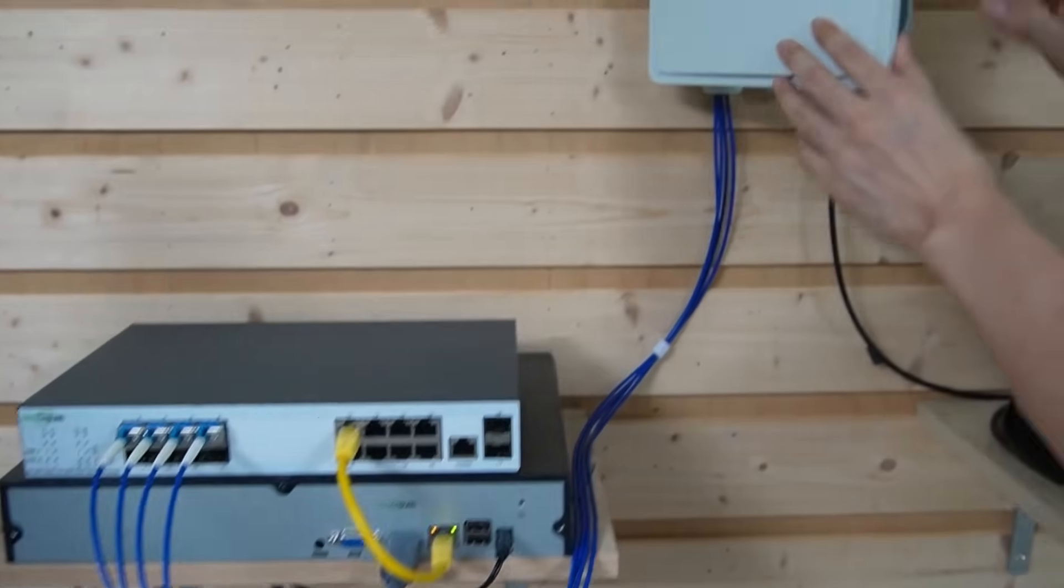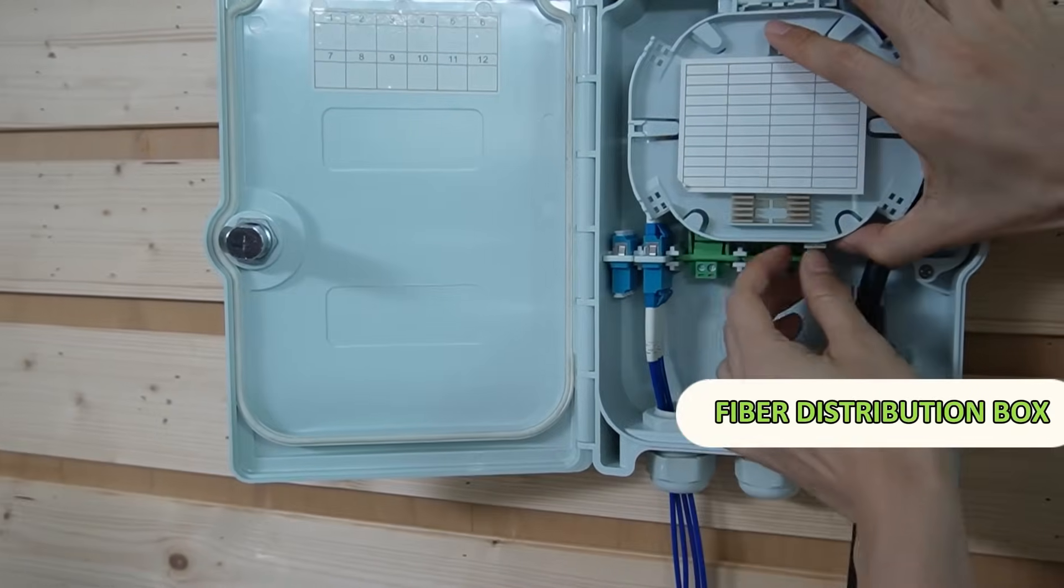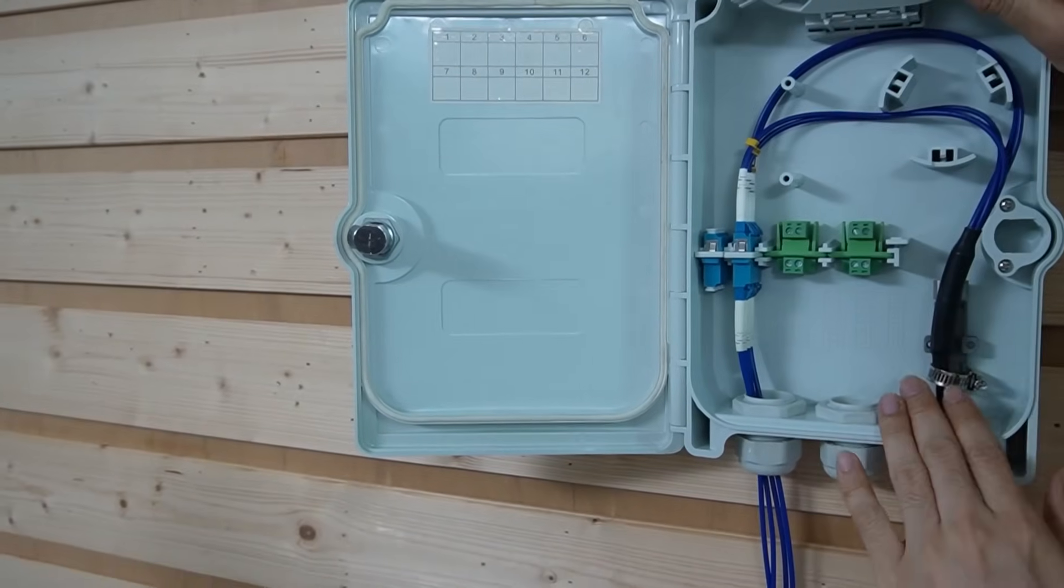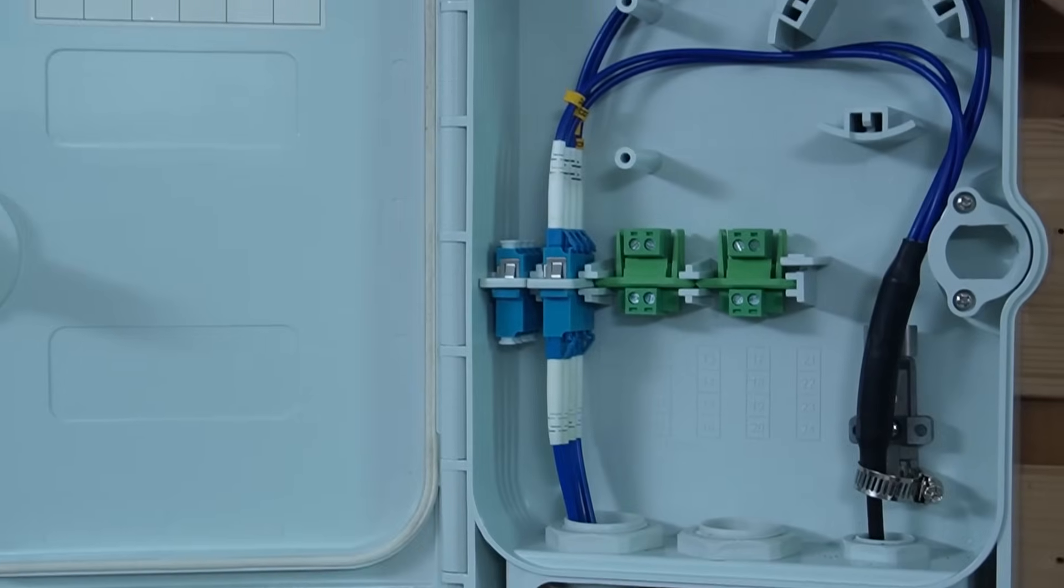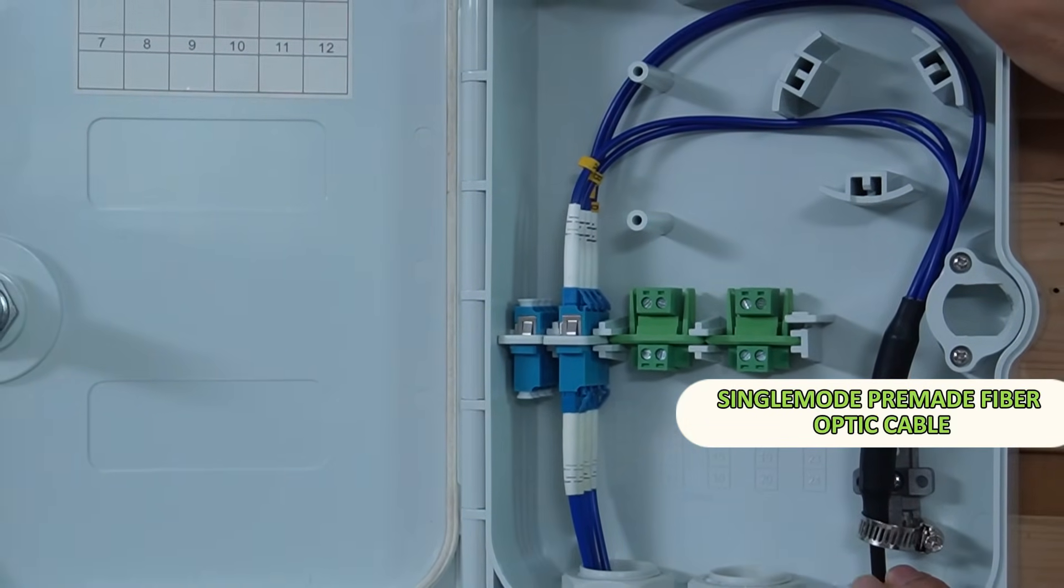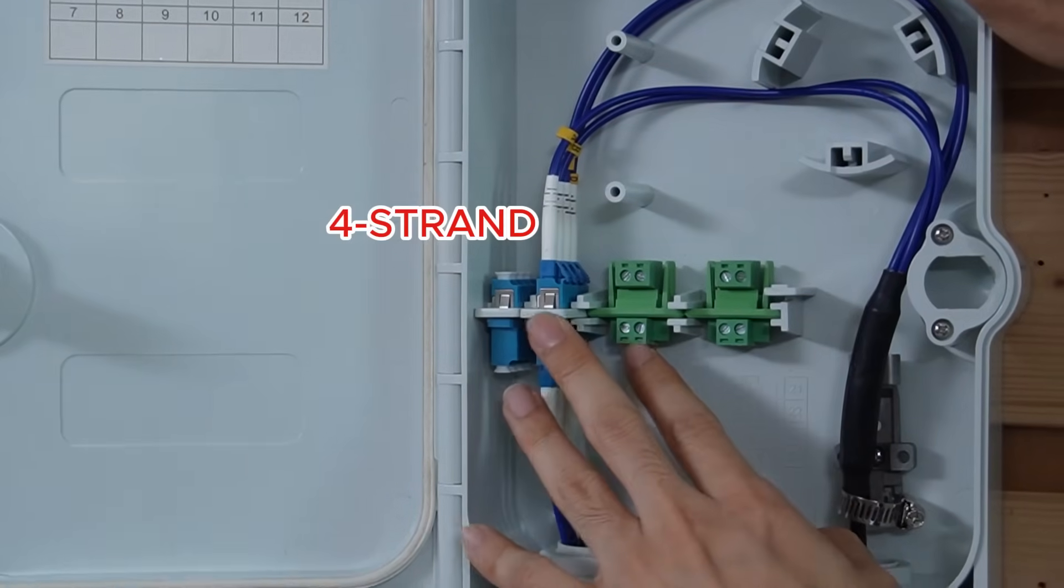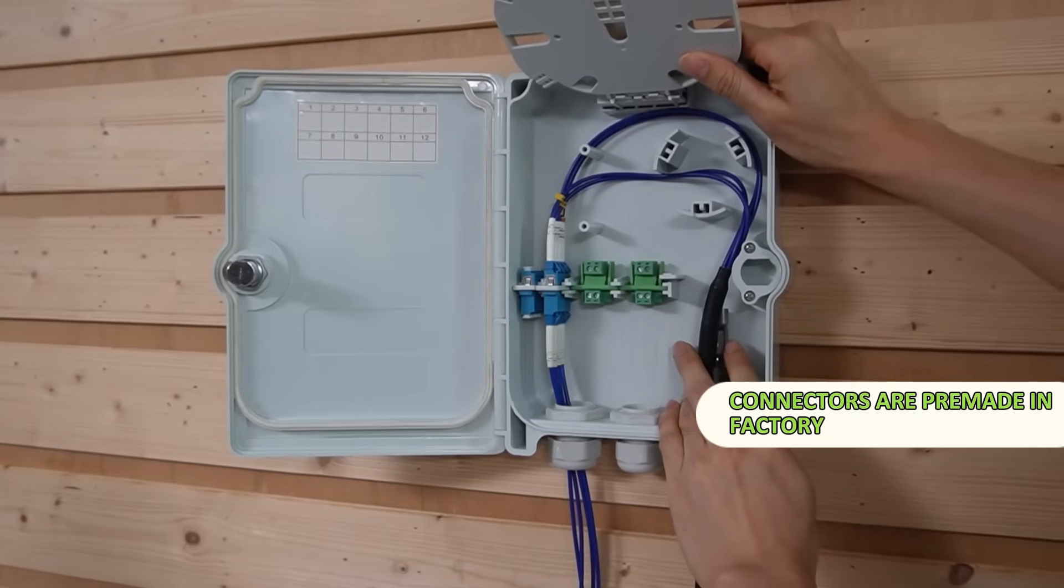Let's look at our first distribution box. This distribution box distributes fiber optic strands from this pre-made fiber optic cable. This is a single-mode pre-made fiber optic cable with four strands, and the connectors are factory-made.